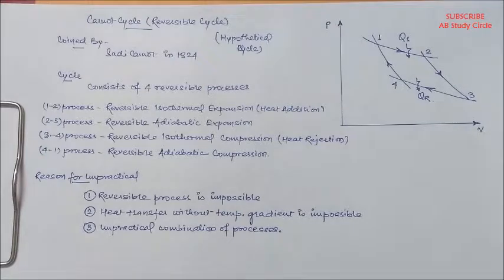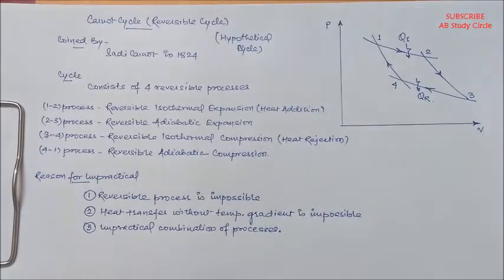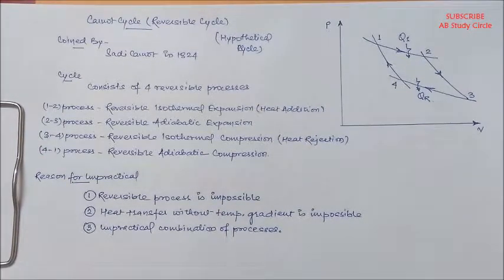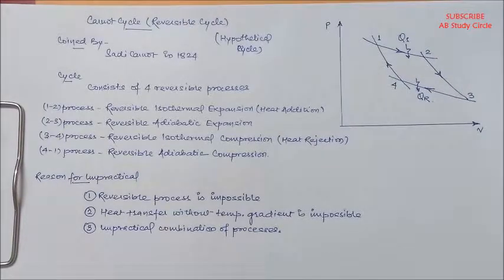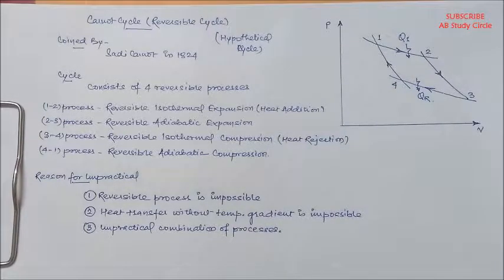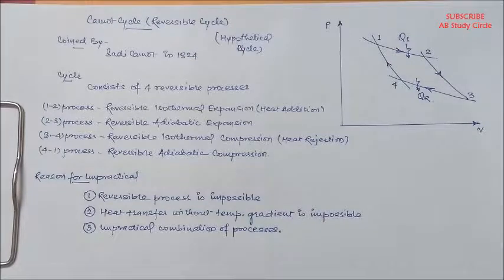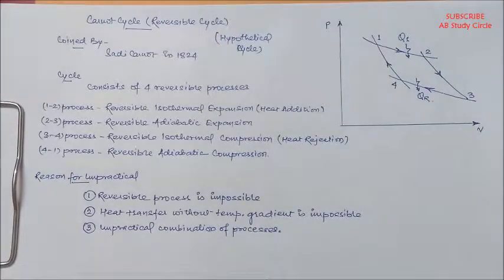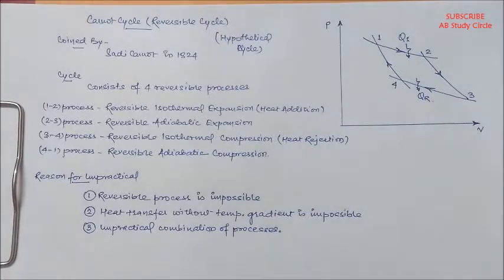And if you talk about adiabatic process, the process should take place very fast so that there should be no time for heat transfer. So these two processes, one process is very slow and the other is very fast—this kind of combination you can't have in a cycle, so it's also impractical. So these are the reasons why this Carnot cycle has been considered as a hypothetical cycle.